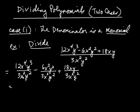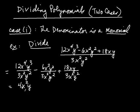Once you've done that, you simply divide these. 3 goes into 12 four times, x to the fourth divided by x squared is x squared, and y cubed over y is y — so 4x squared y for that one. And then minus 2, because 3 goes into 6 twice, and the x squareds cancel, the y squareds cancel.